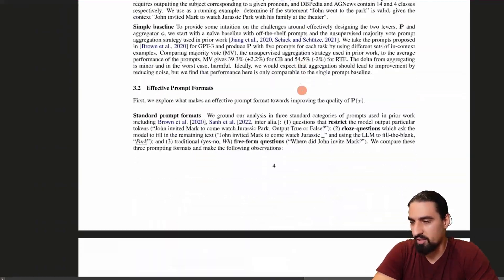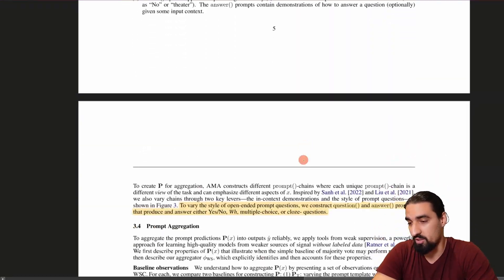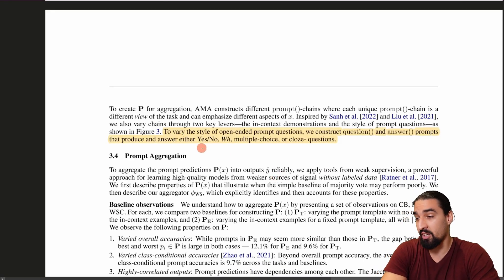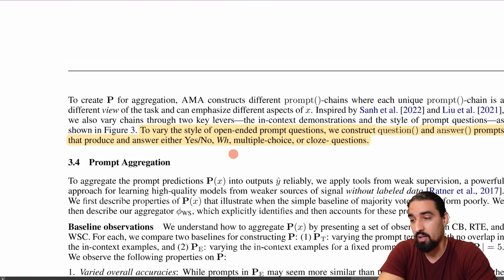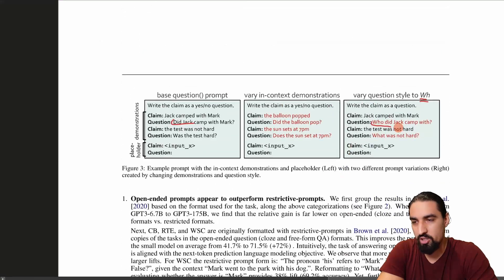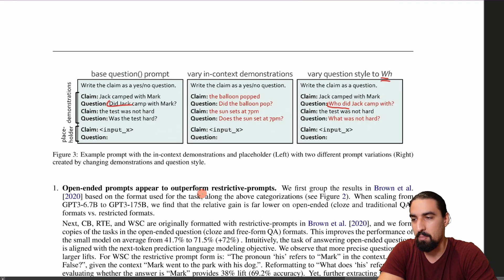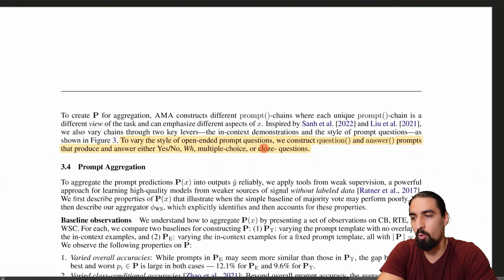Finally, a couple more details I want to show you. I mentioned these variations here. So they are kind of strategic in those variations. It's not just random variations. They say here to vary the style of open ended prompt questions, we construct question and answer prompts that produce an answer either yes, no, WH multiple choice or close questions. So that's as I said here, some of these questions are the WH questions. And then some of these questions like did Jack camp with Mark are yes or no questions. And they mentioned some other classes of questions that they force these different chains to produce. And that's the idea.